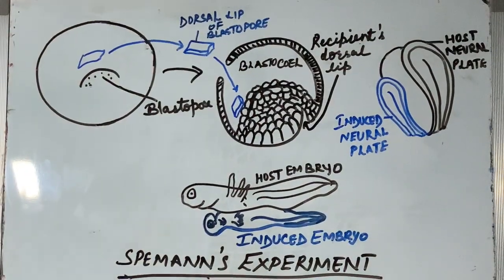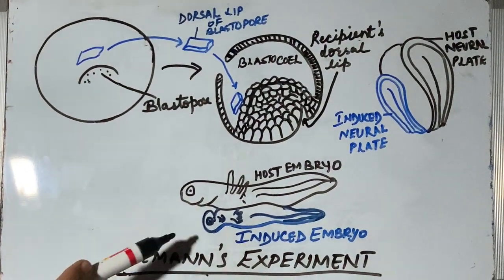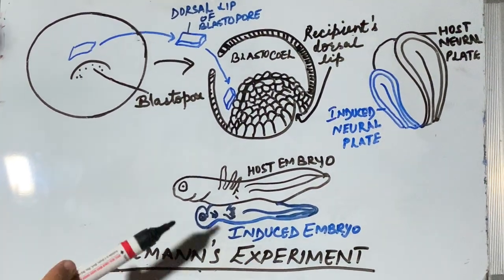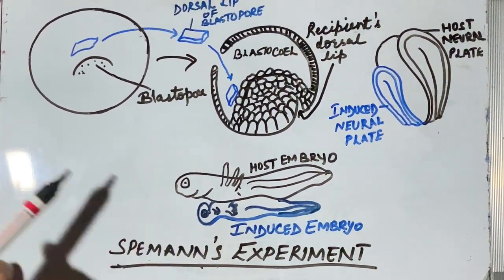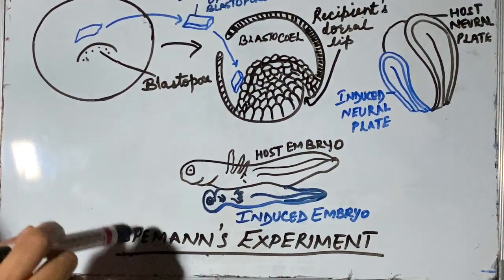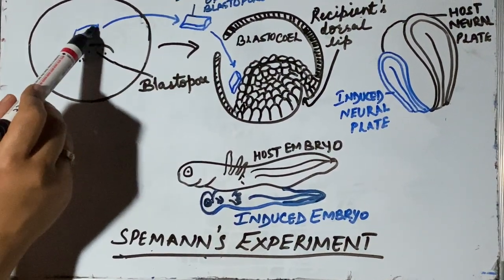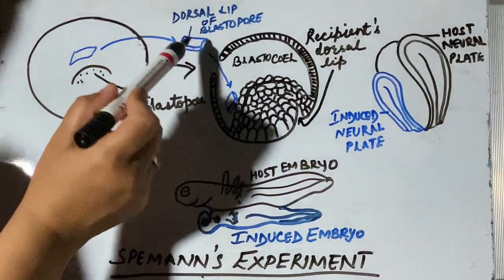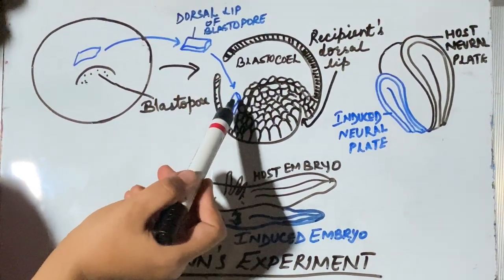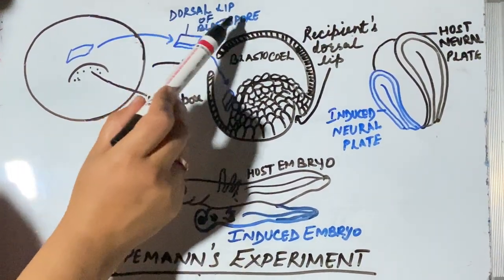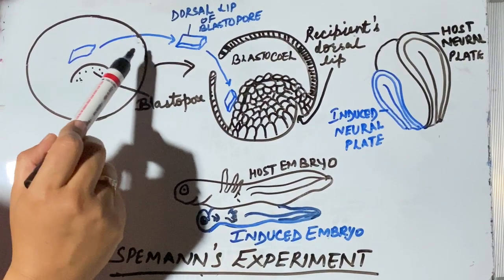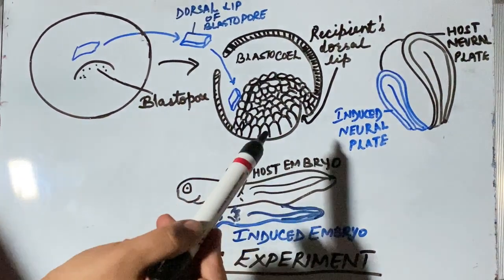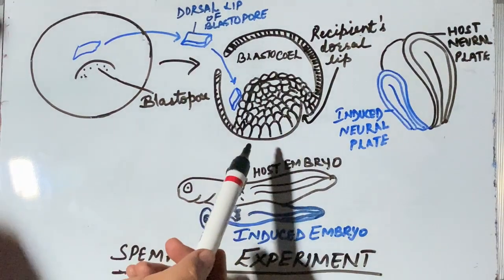This process of induction was experimentally demonstrated by Spemann in 1920 in amphibians. He observed that the dorsal lip of blastopore — wherever it is introduced, it leads to the development of nervous tissue and its associated structures.